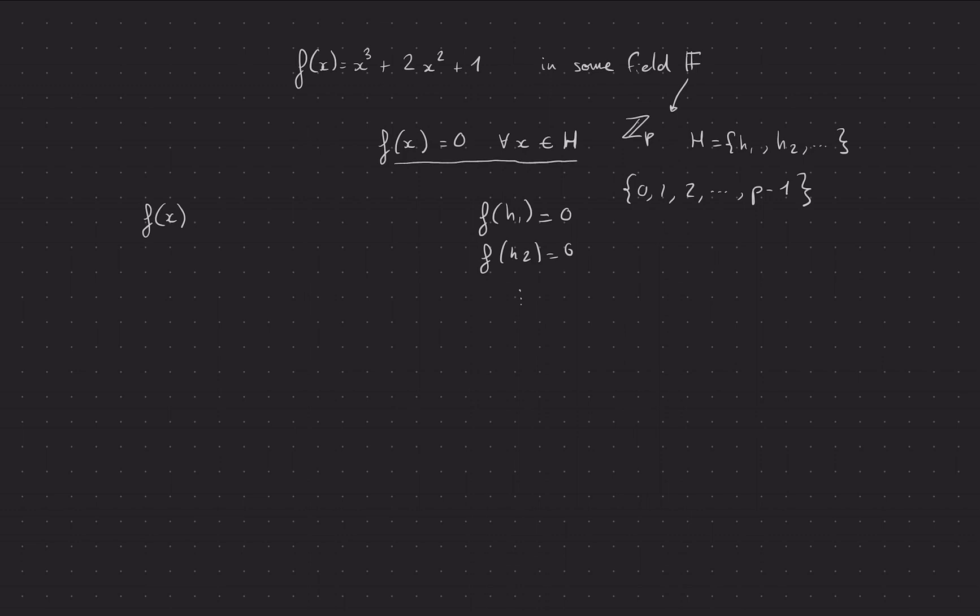Anyway, we're in this field and basically if you know that f(x) vanishes in all of these points, it means that you can actually write it as (h1 - x) times (h2 - x) etc. times some other polynomial t(x). And we'll call this little guy the quotient polynomial.